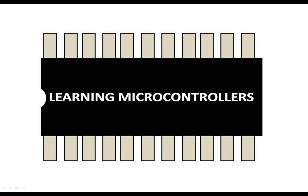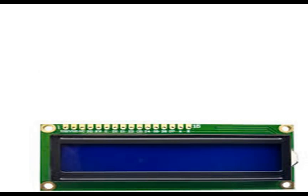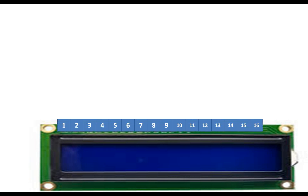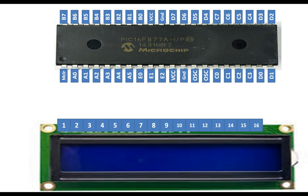Hello guys, welcome to Learning Microcontrollers. In this video I'm going to show you how to interface a 16x2 LCD with a PIC 16F877A microcontroller. So let's get started. This is our 16x2 LCD — as you can see it has 16 pins. If you hold it from left to right we have pins 1 to 16. Let me show you how to connect it with the PIC.